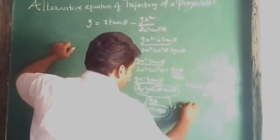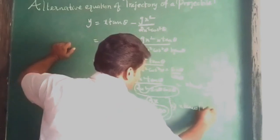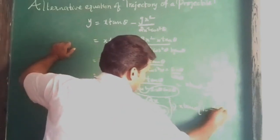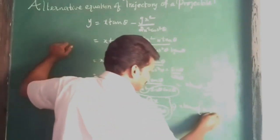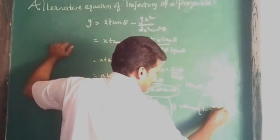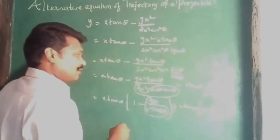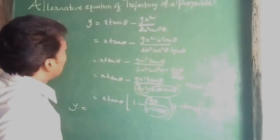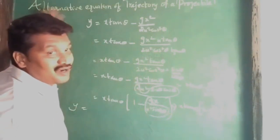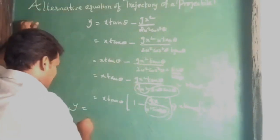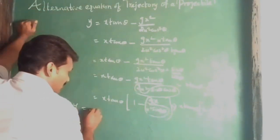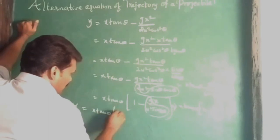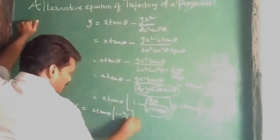This simplifies to x·tan θ into 1 minus x by R. This is the alternative equation of the trajectory of the projectile: y equal to x·tan θ into 1 minus x by R.